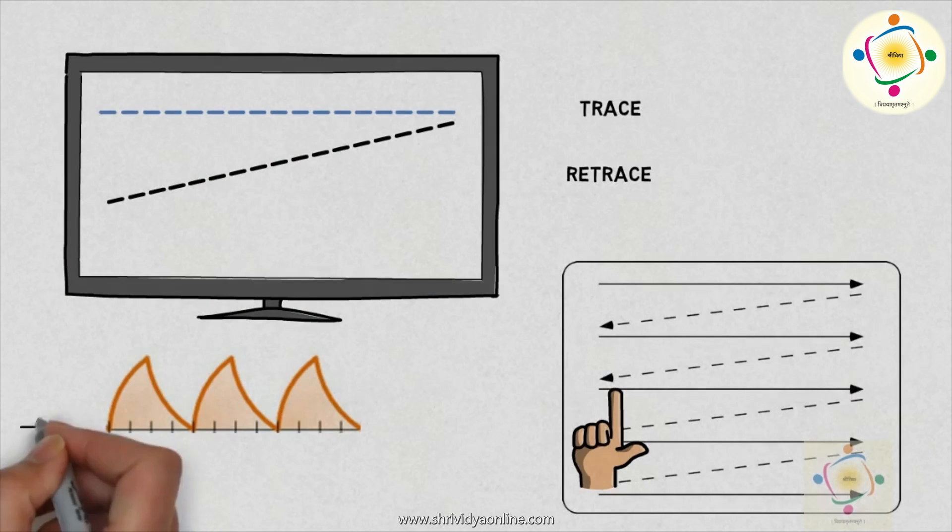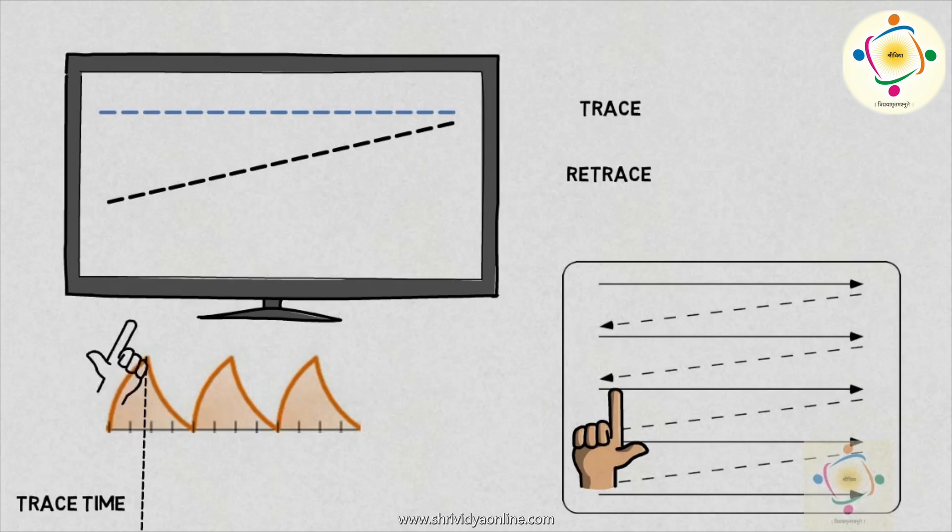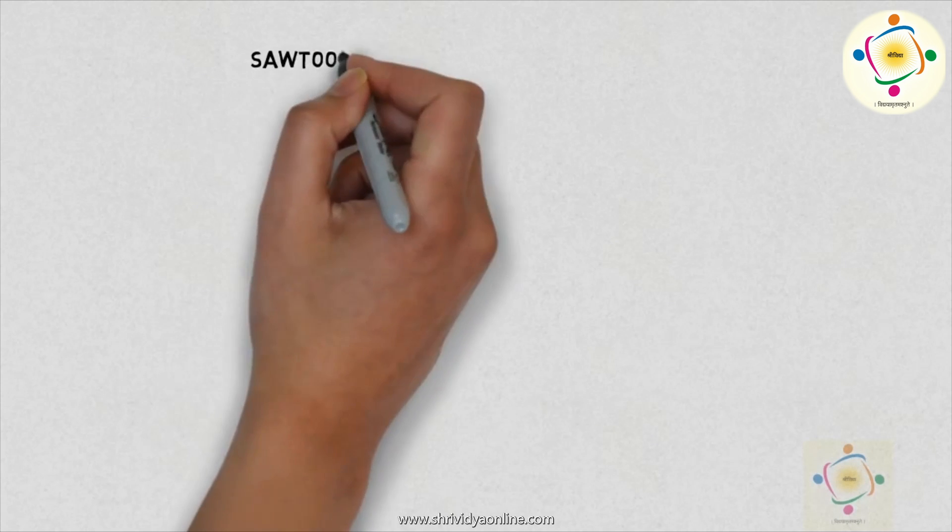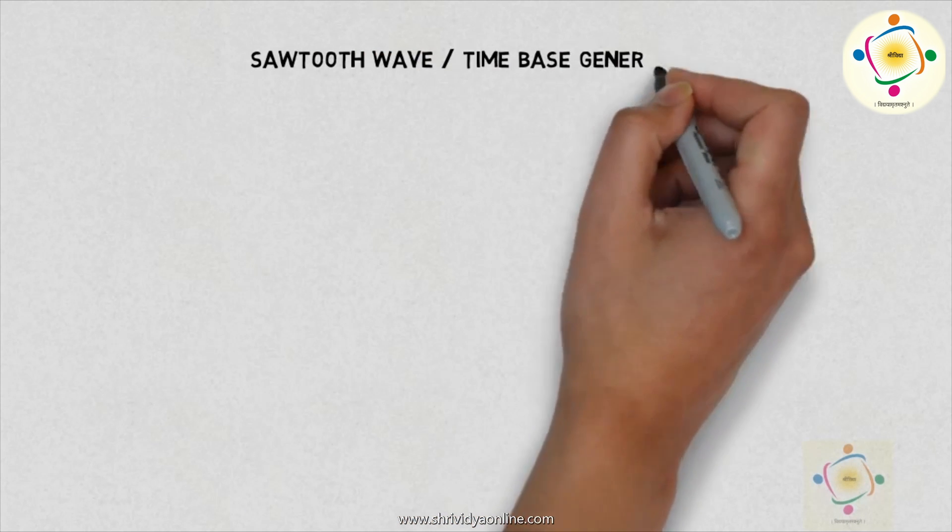So we need sawtooth wave where trace time is more than retrace time. We can see this on the waveform. The circuit which generates sawtooth wave is known as the sawtooth wave generator. This is also popularly known as time-based generator.